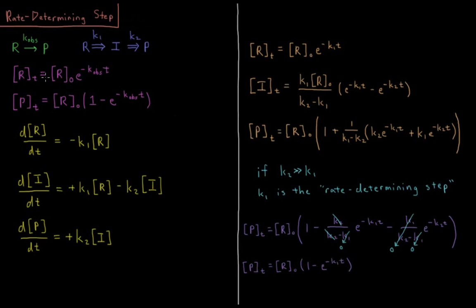Now let's compare this and look at our rate law if we consider this to just be a single elementary step. We have p of t equals r0 times 1 minus e to the minus k observed here, k1 here times t.